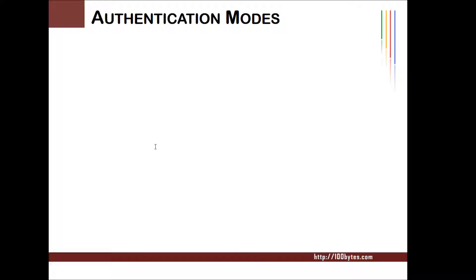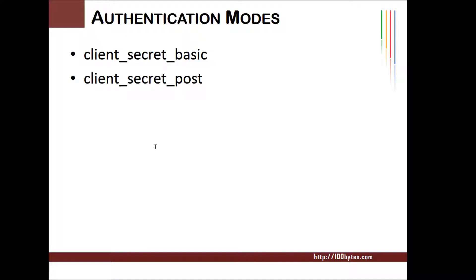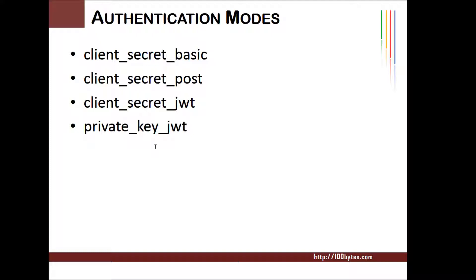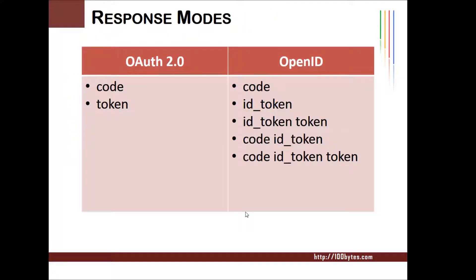Authentication mode refers to the ways a client — like the photo app — can authenticate with the authorization server. Client secret basic encodes the username and password and passes them as an authorization header. Client secret post sends secrets in the POST body. Client secret JWT signs the client using keys provided by the OAuth server. Private key JWT signs the client using a possessed private key. And 'none' means no authentication is involved between the client and the OAuth server.